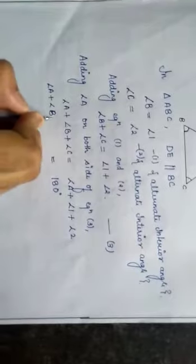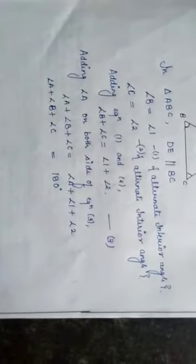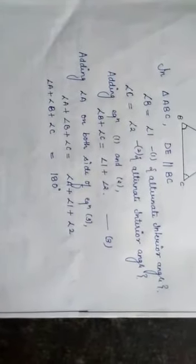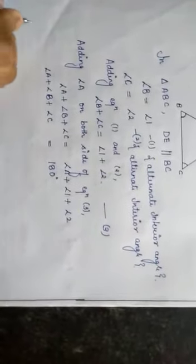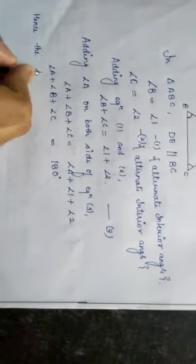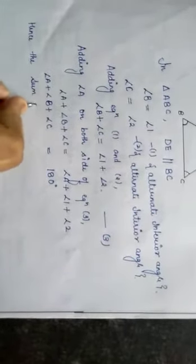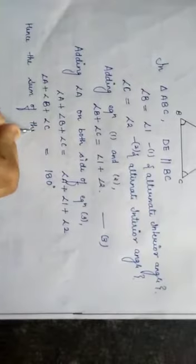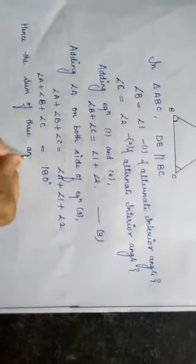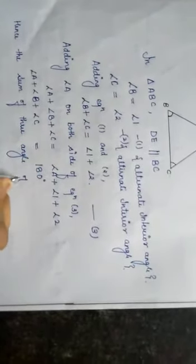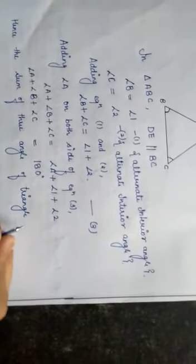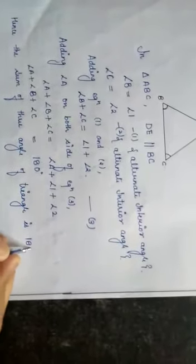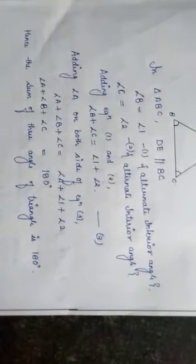Angle A plus angle B plus angle C is equal to 180 degree. Hence, the sum of the three angles of a triangle is 180 degree. Thank you.